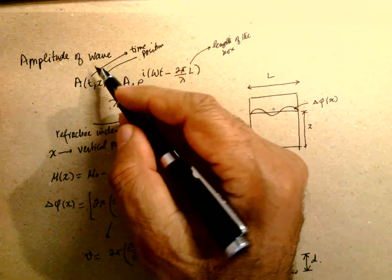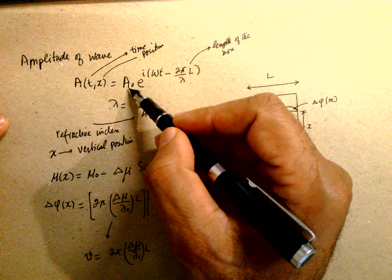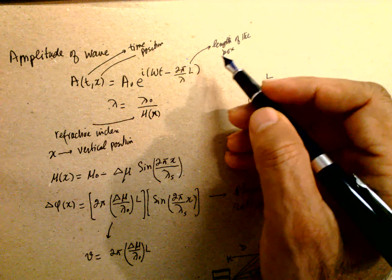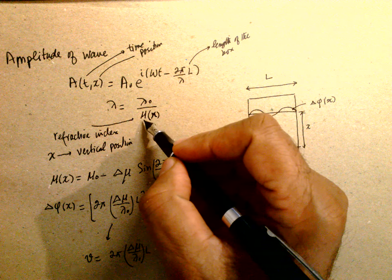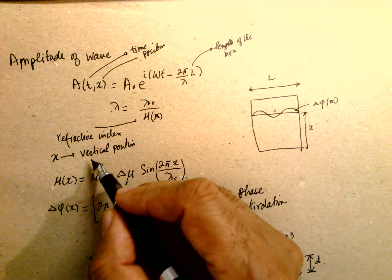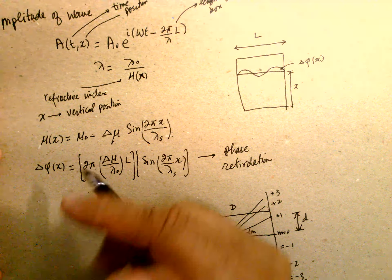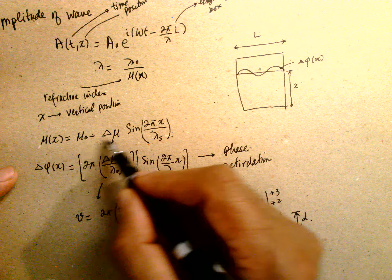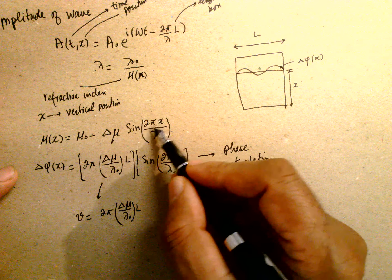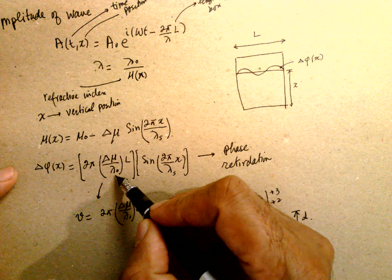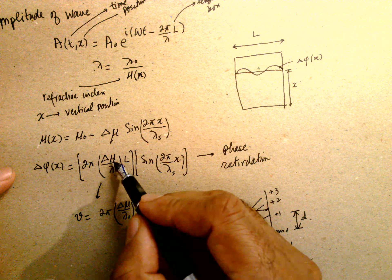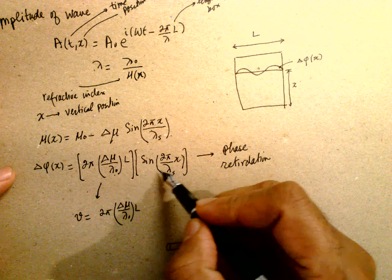The refractive index mu is changing. The amplitude of the wave is t(x) = A₀ · e^(i·ω·t − 2π/λ · L), where L is the length of the box and λ = λ₀ · μ, with μ being the refractive index of the medium and x the vertical position. The refractive index variation is μ(x) = μ₀ − δμ · sin(2π·x / λ_s), where s denotes sound and 0 denotes light. The phase change is then given by 2π · δμ / λ₀ · L · sin(2π·x / λ_s).